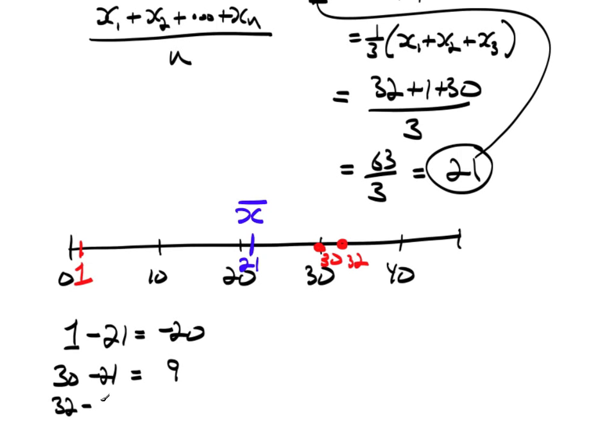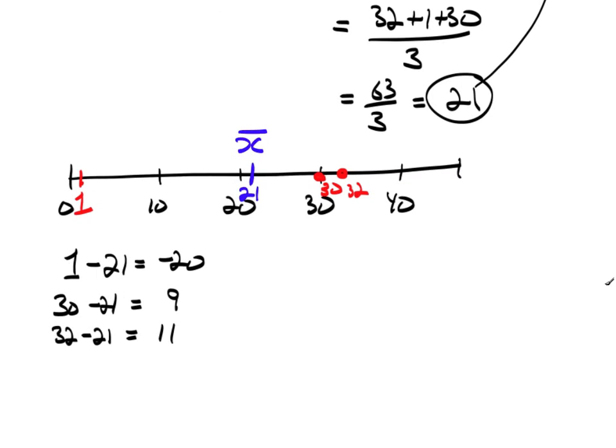And if I add all these up, I get zero. So anything to the left of the mean would give me a negative when I subtract the mean from it. Anything to the right of the mean would give me a positive when I subtract the mean from it. So this balancing point balances the negative and the positive.